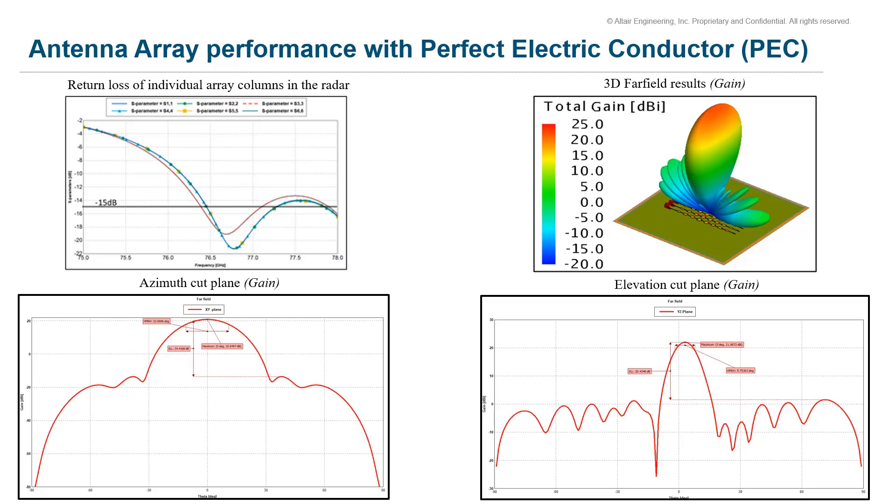Since antenna patches are set to PEC, that is perfect electric conductor, the efficiency of the array is 100% ignoring the dielectric losses in the substrate. The 3D gain plot shown in the image at the top right and the two principal cut planes of the radiation pattern are shown in the images at the bottom. The side lobe level in the azimuth plane and the elevation plane is around 34 dB and 20.43 dB respectively.